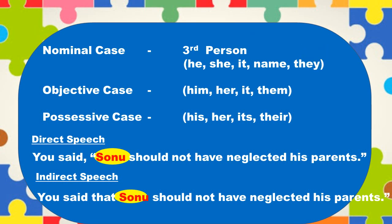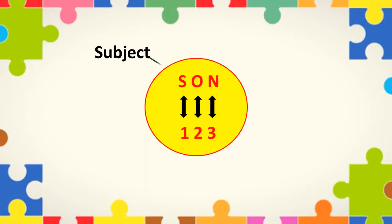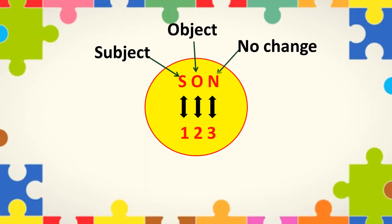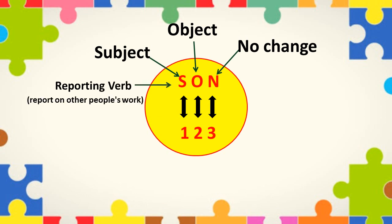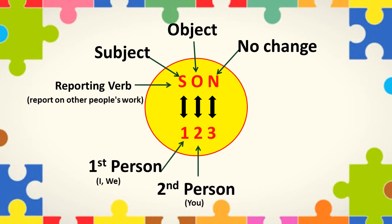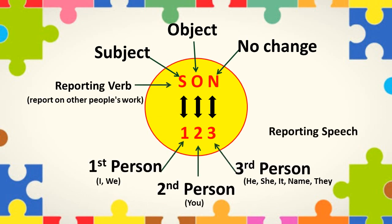So as per the SUN concept: first person — subject will change; second person — object will change; third person — no changes. I hope it is clear to all of you. That's all for today. Have a good day.